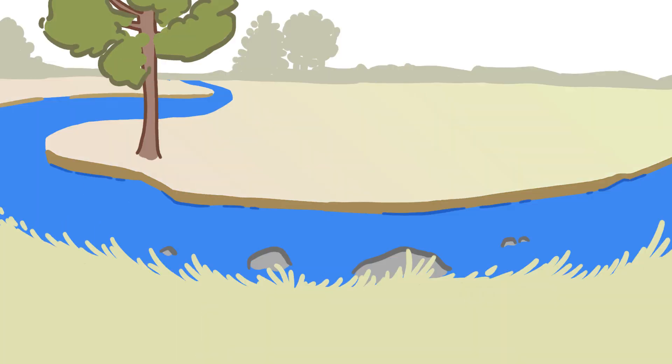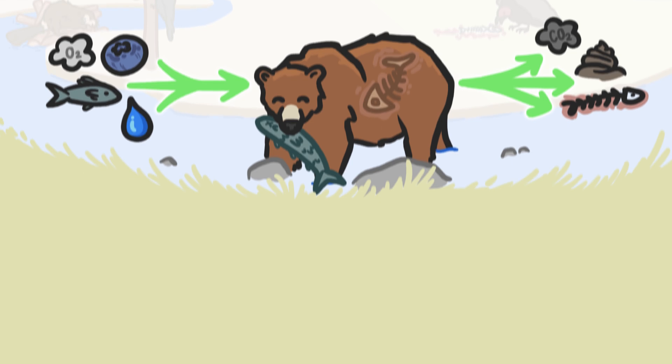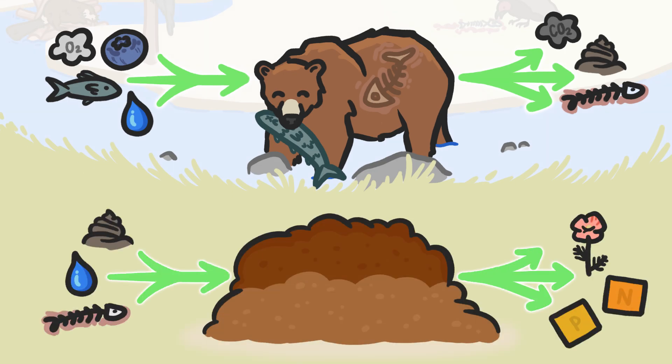Then there's the fact that living things interact with their surroundings in all sorts of ways. A bear, for instance, gobbles up resources from its habitat and spreads nutrients around. And soil, too, is a dynamic link in its ecosystem.